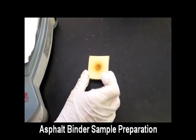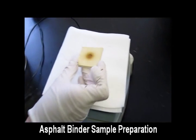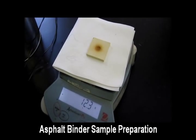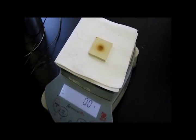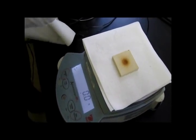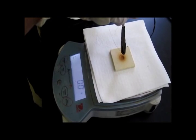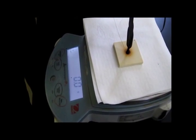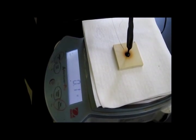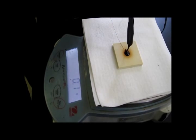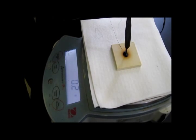For asphalt binders, use a silicone mold measuring approximately 8 millimeters in diameter and 2 millimeters deep. The asphalt binder is heated in the oven at 150 degrees Celsius. Upon reaching the application temperature, pour 0.4 ± 0.05 grams of molten binder into the mold.